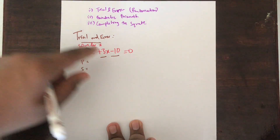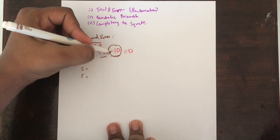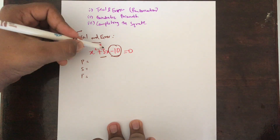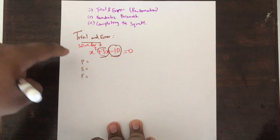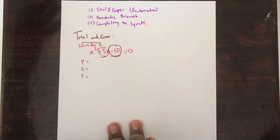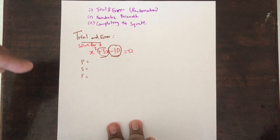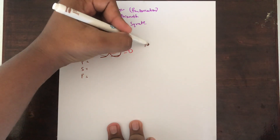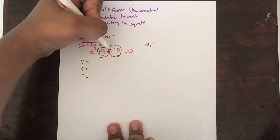You need 2 numbers that multiply to give minus 10 and add to give plus 3, and these 2 numbers must be the same. This is where the trial and error comes in. Let's start with something like 10 and 1 — if you multiply them they give you 10, but you are looking for minus 10.